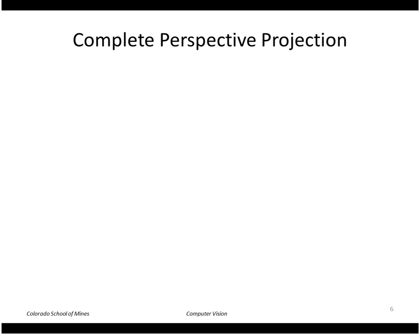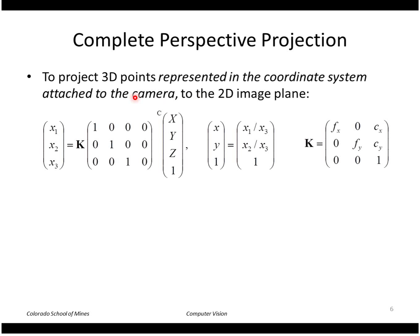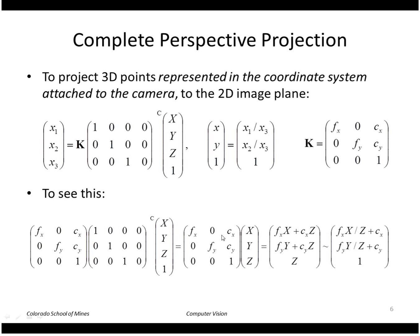For the complete perspective projection, if we have a point represented in the camera's coordinate system, we multiply by the 3×4 matrix of ones and zeros, then by our camera intrinsic matrix K. The result is a 2D homogeneous point, and we divide through by the third element to get the resulting image point. Multiplying K through gives us the vector, and dividing by the third element yields the perspective projection equations we've seen before.